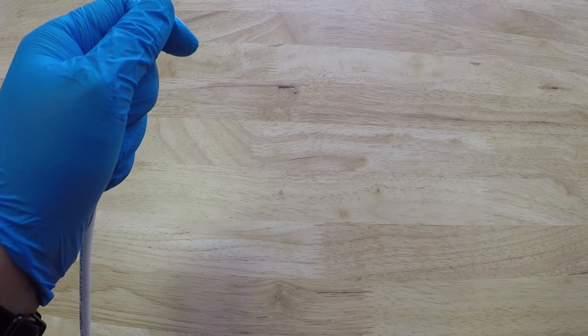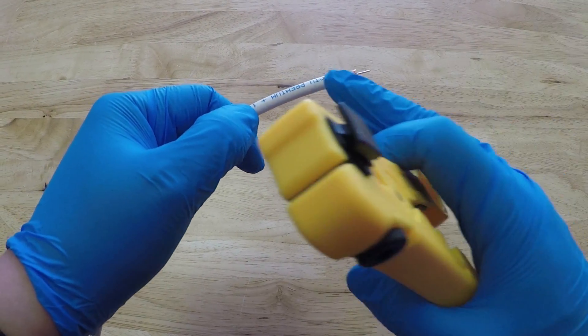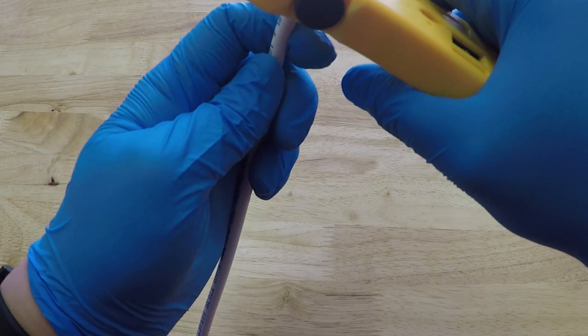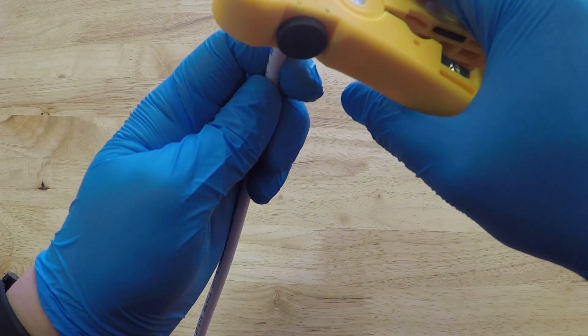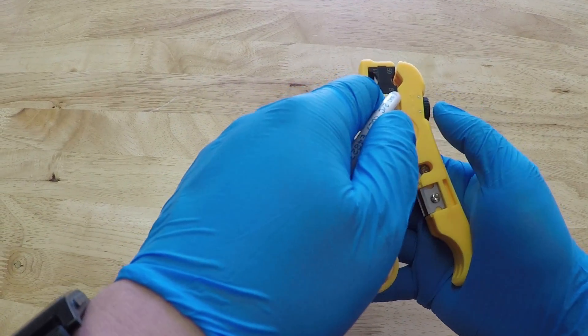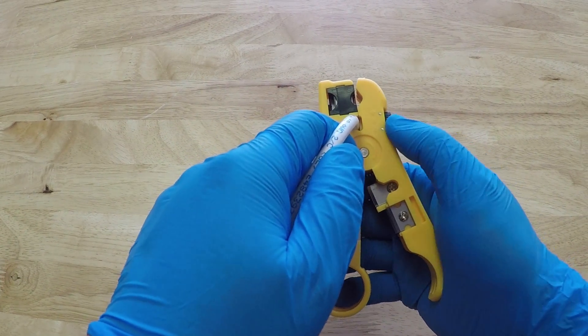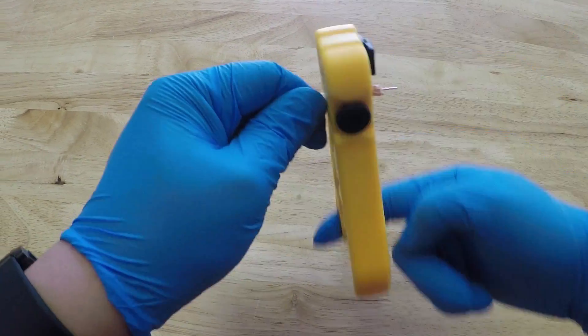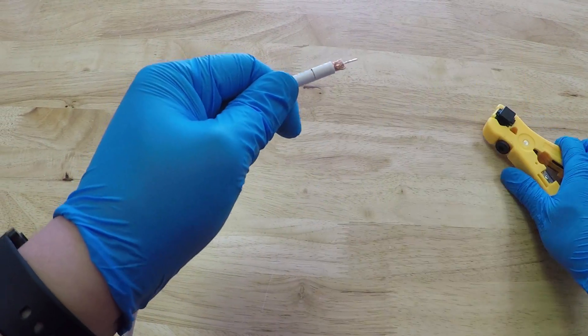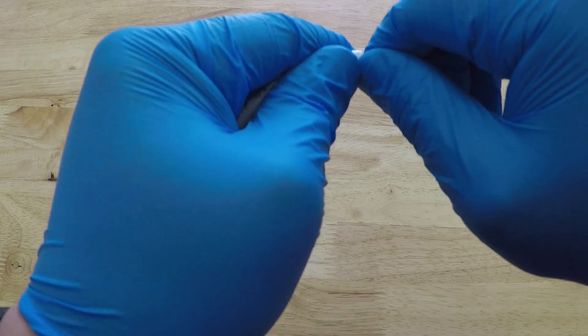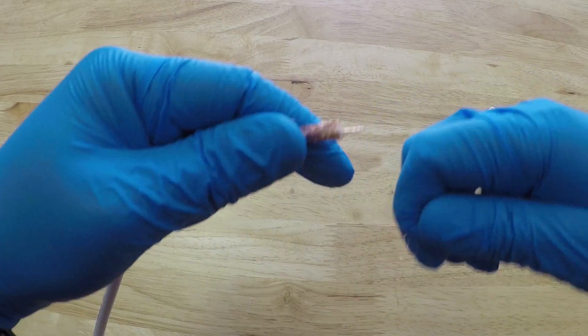You can also choose to just peel off the jacket part and leave the core intact. To do that, you use the second opening on the tool and make sure the cut depth is correct by adjusting the distance. Then again rotate the tool, and after a few rotations pull out the jacket.